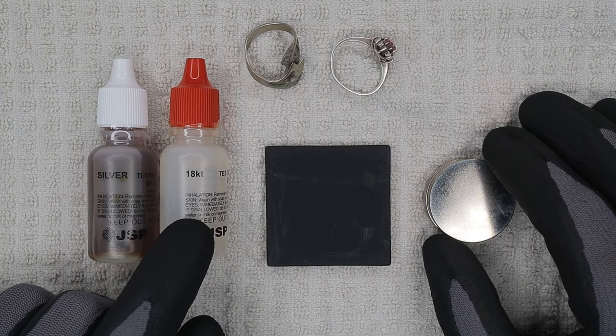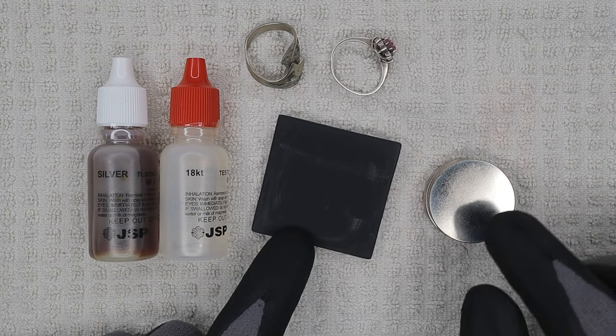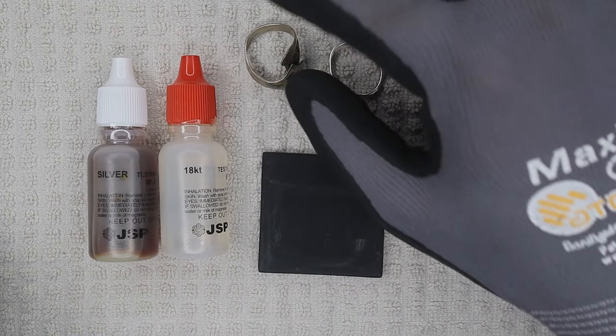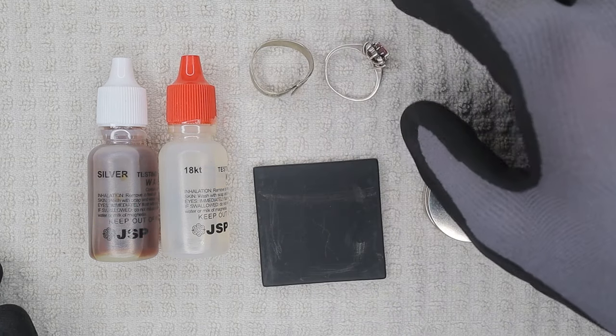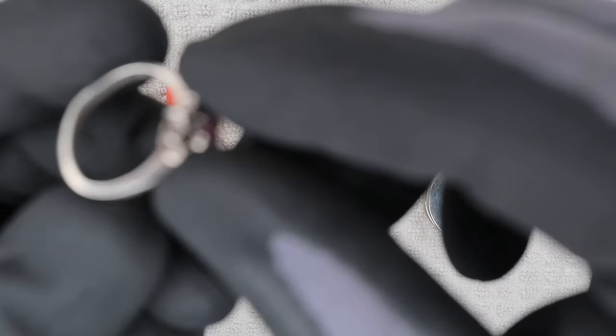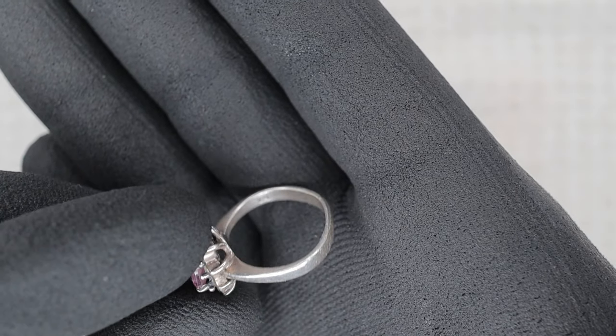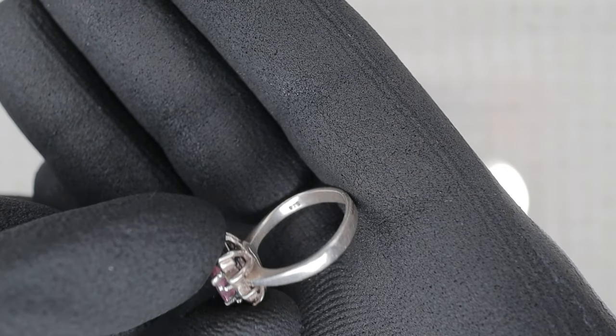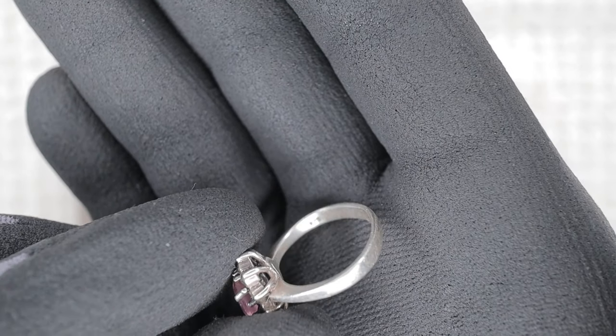So what we have here is the 18 karat gold acid, and then we have our silver acid, our scratch pad, our rare earth magnets, and two suspected silver rings. This one does not have any kind of mark on it. This ring does have a 925 mark. Just because it says 925 doesn't mean that it is actually silver.